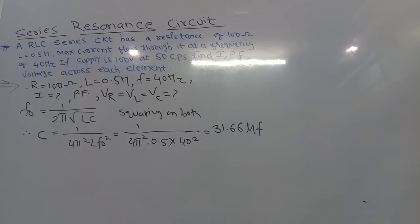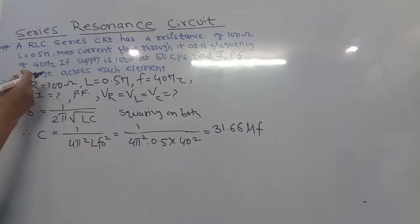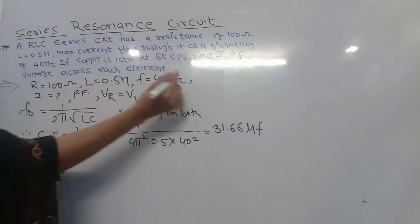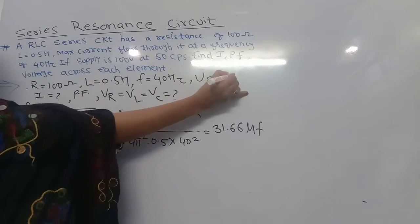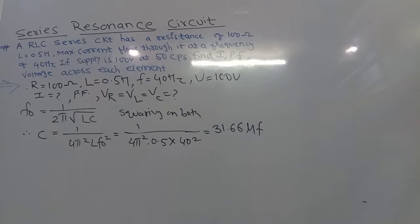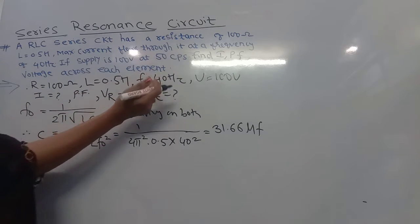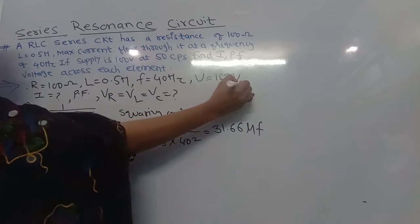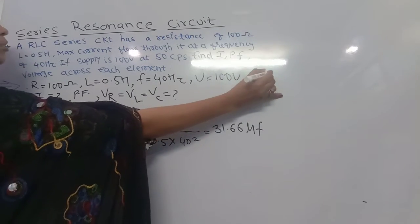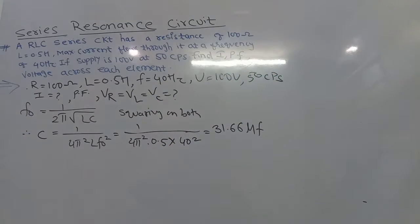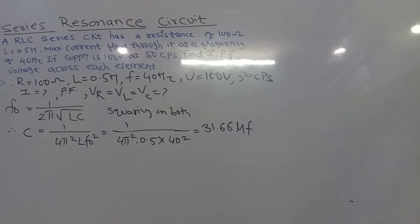The supply voltage V is given as 100 volt, and the operating frequency is 50 cycles per second. Now we will calculate the current, but before that we will calculate the inductive and capacitive reactances.